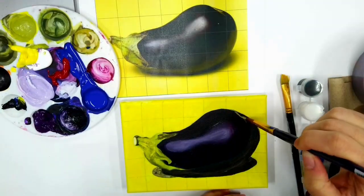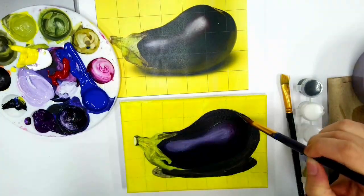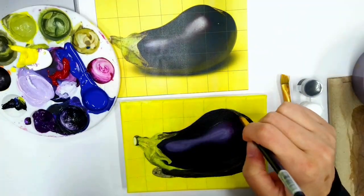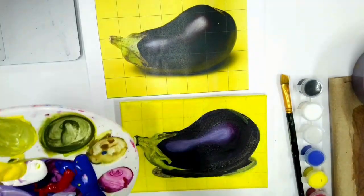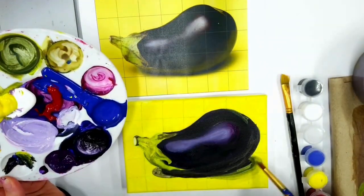I keep going between my red violet and my yellow to give that little hint of yellow at the bottom, and then I'm even going with yellow at the top of the eggplant that has the reflection from the background.